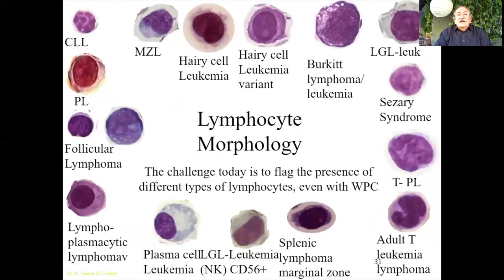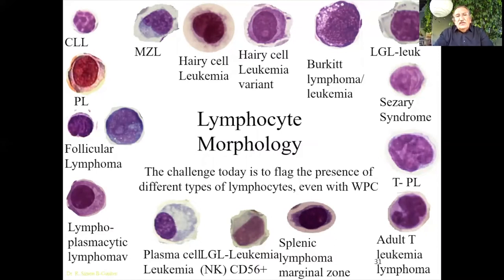Here we have a slide showing lymphocyte morphology with different types of cells. We cannot do a flag for all these cells just saying 'abnormal lymphs.' I think we need to try - even if we don't report it, even if we give only a number - to create flagging for each of the abnormal cells.